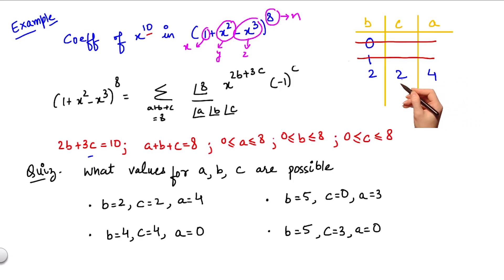Hence, b equals 2, c equals 2, a equals 4 is one possible scenario for the values of abc.